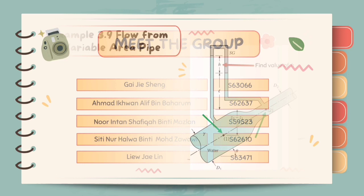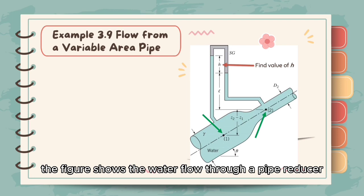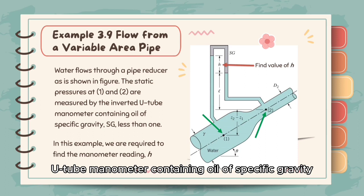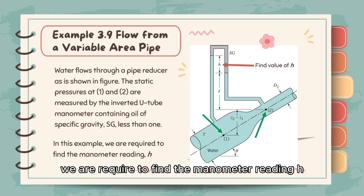For example 3.9, the figure shows water flow through a pipe reducer. The static pressures at points 1 and 2 are measured by the inverted U-tube manometer containing oil of specific gravity less than 1. In this example, we are requested to find the manometer reading h.